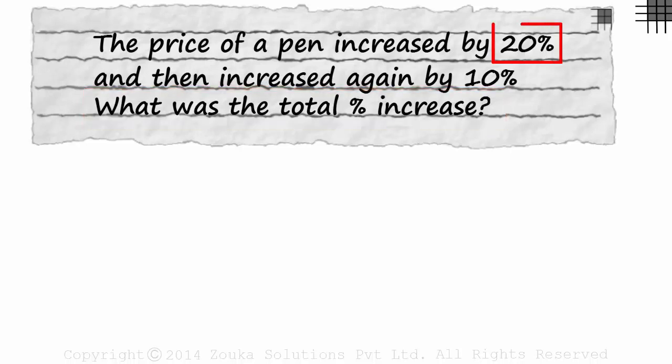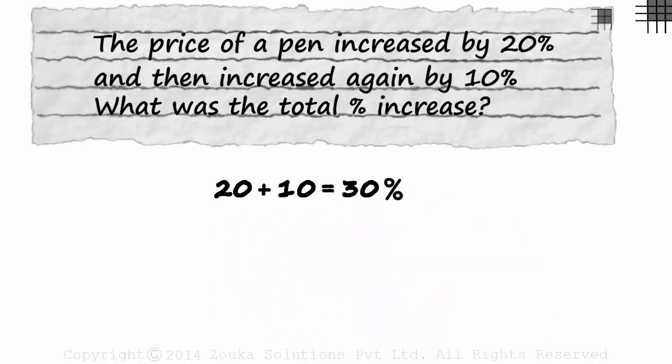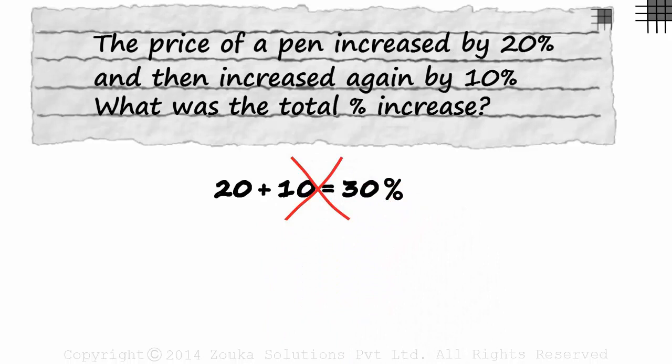Increased by 20% and then by 10%. So the total increase will be 20 plus 10 which is 30%. As you would have probably guessed, it's not that straightforward.